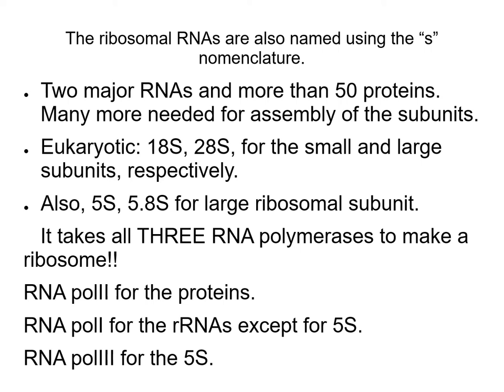RNA Pol II is the polymerase for protein-coding mRNAs, while RNA Pol I is specifically dedicated to the production of ribosomal RNAs — a whole RNA polymerase whose total job is to synthesize ribosomal RNAs.